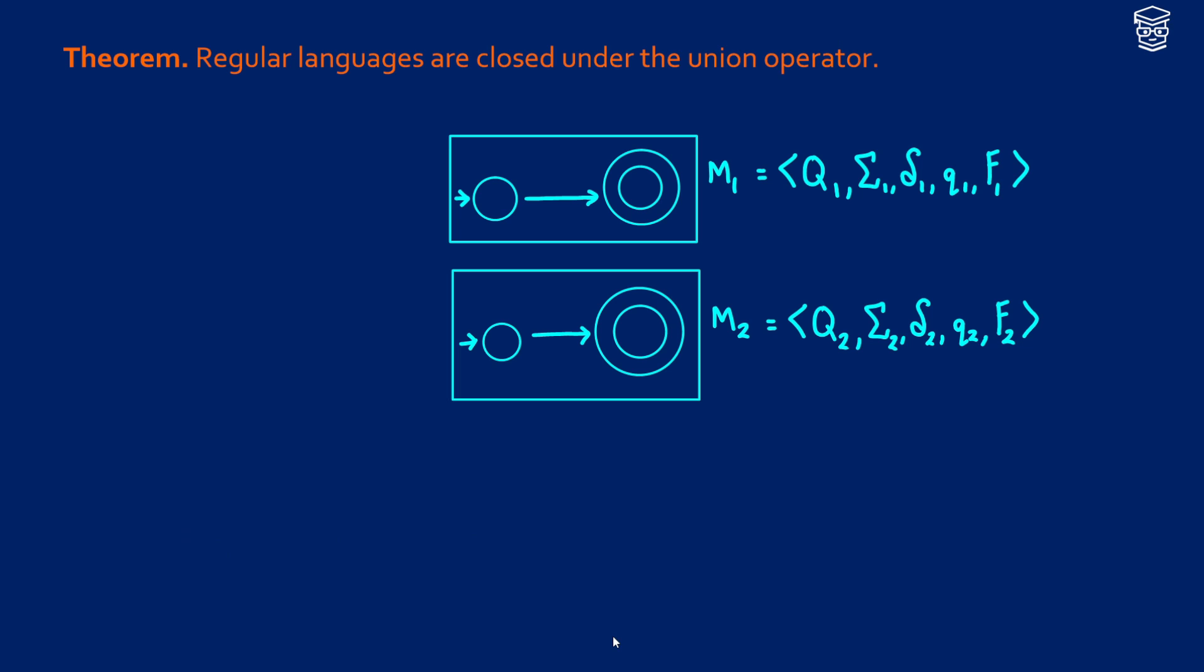We're going to start by imagining we have two machines. These are NFAs, M1 and M2. They have their own states, alphabets, assignment functions, and everything like that. What we want to do is create a new machine, and what we want this machine to accept is everything in M1 union M2. In other words, the language we're going to get is a language that accepts everything that machine 1 accepts and everything that machine 2 accepts. So how are we going to do this? We'll call this N for a new machine.